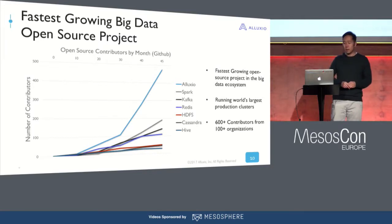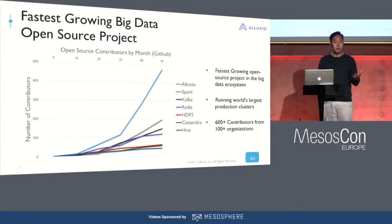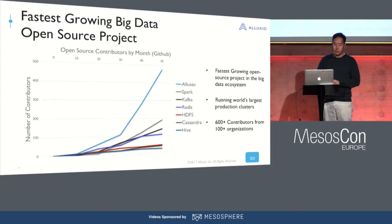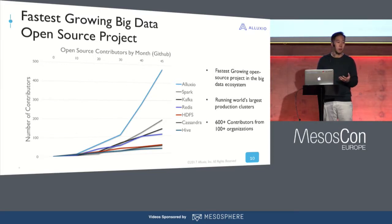Alluxio is an open-source project and one of the fastest-growing ones. It's been open source for about four years. This graph shows the number of GitHub contributors over the first four years — the top line is Alluxio. The graph is a little stale, but today there are over 600 contributors to the Alluxio project. It's been really exciting to be part of that community and see how different people are using Alluxio in different ways.